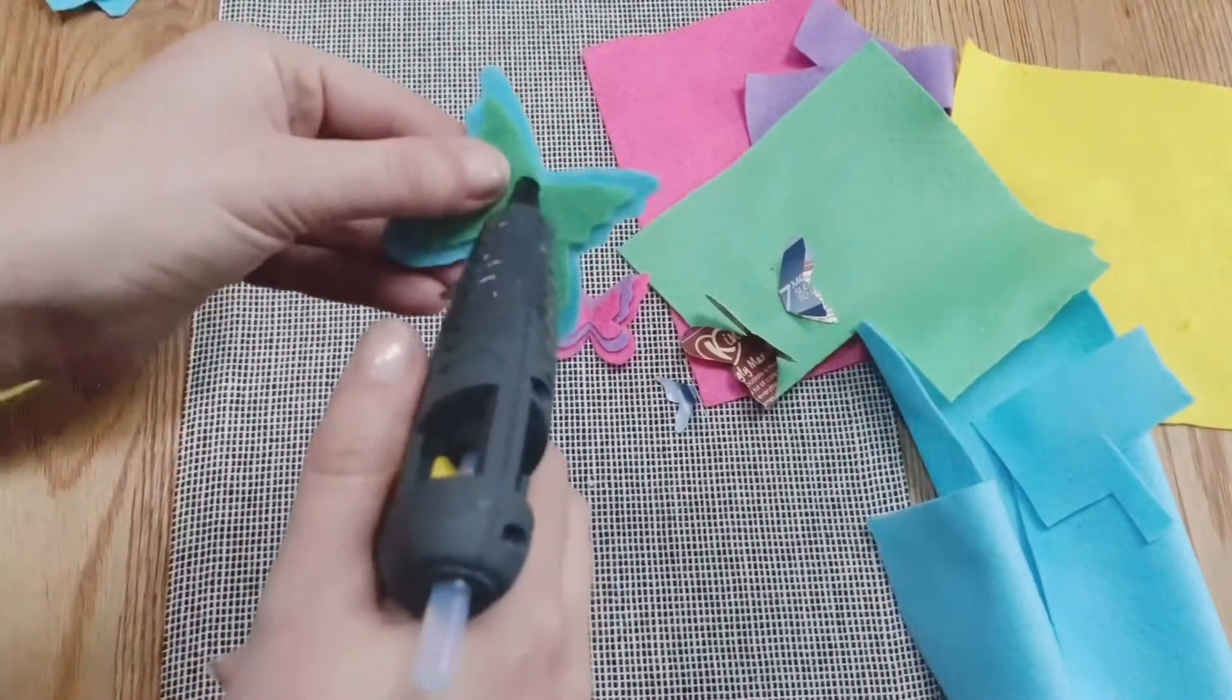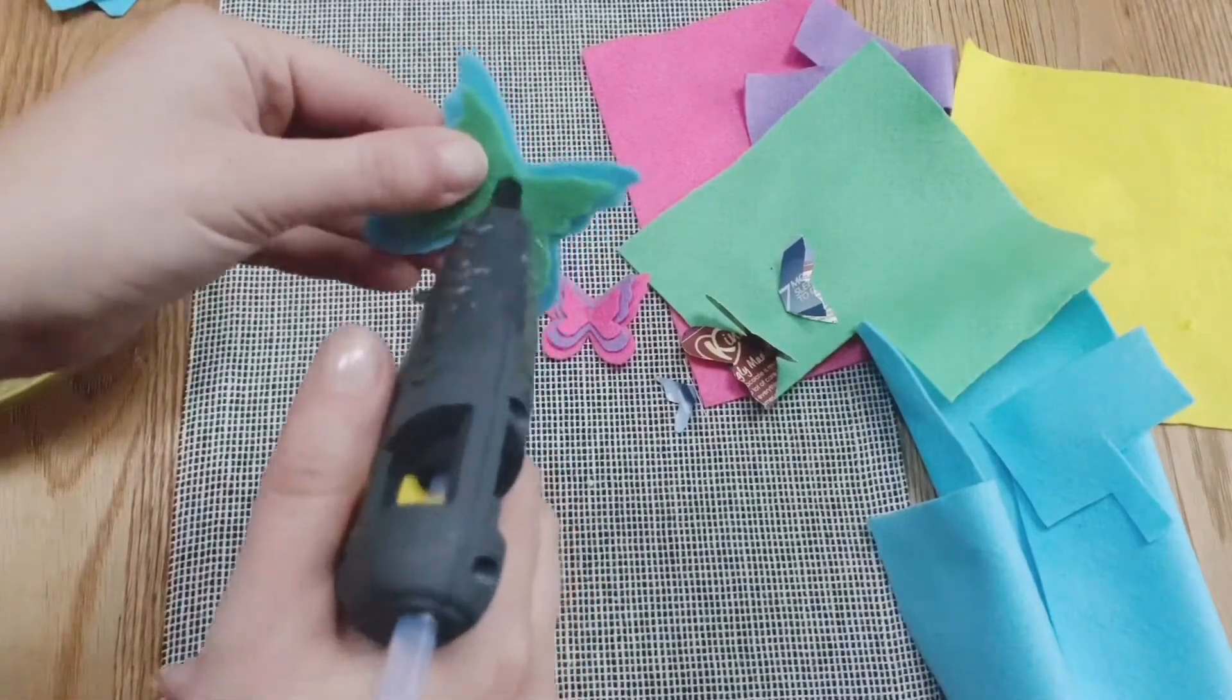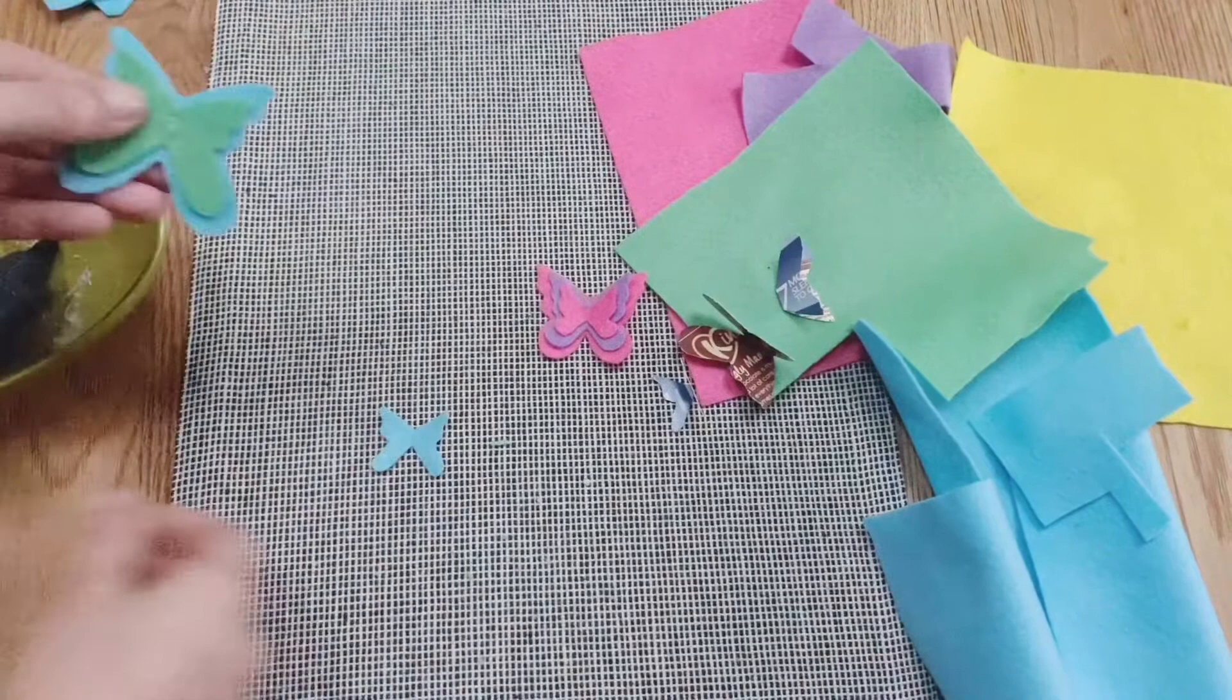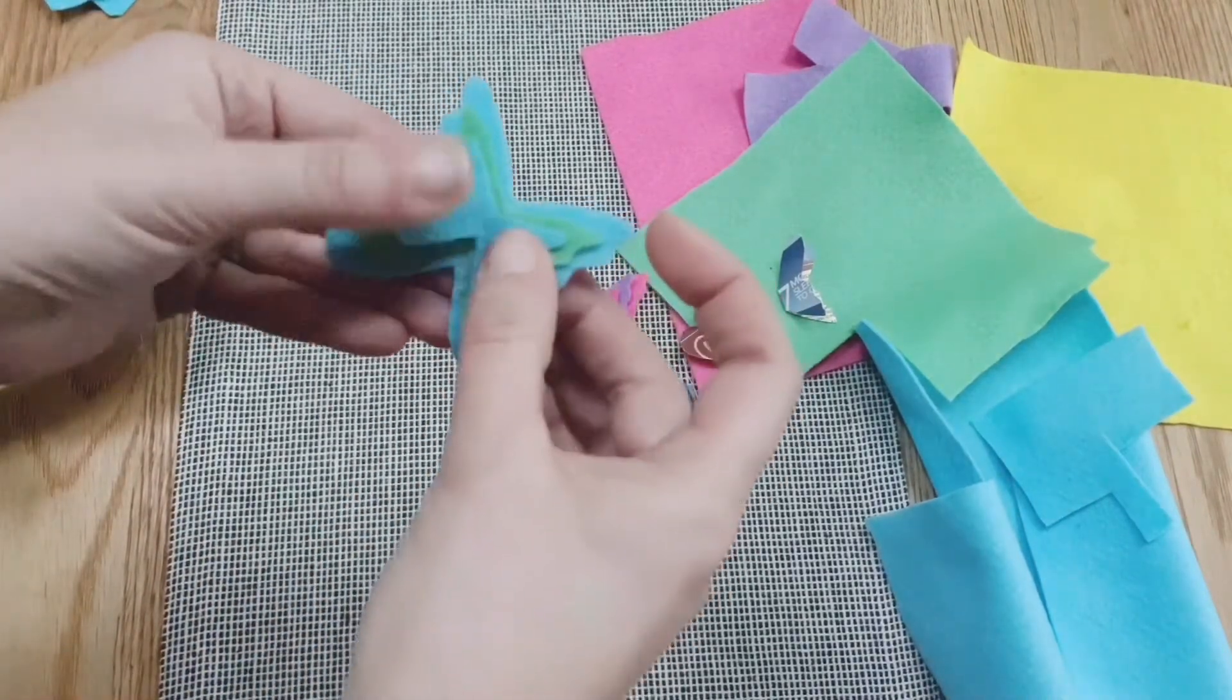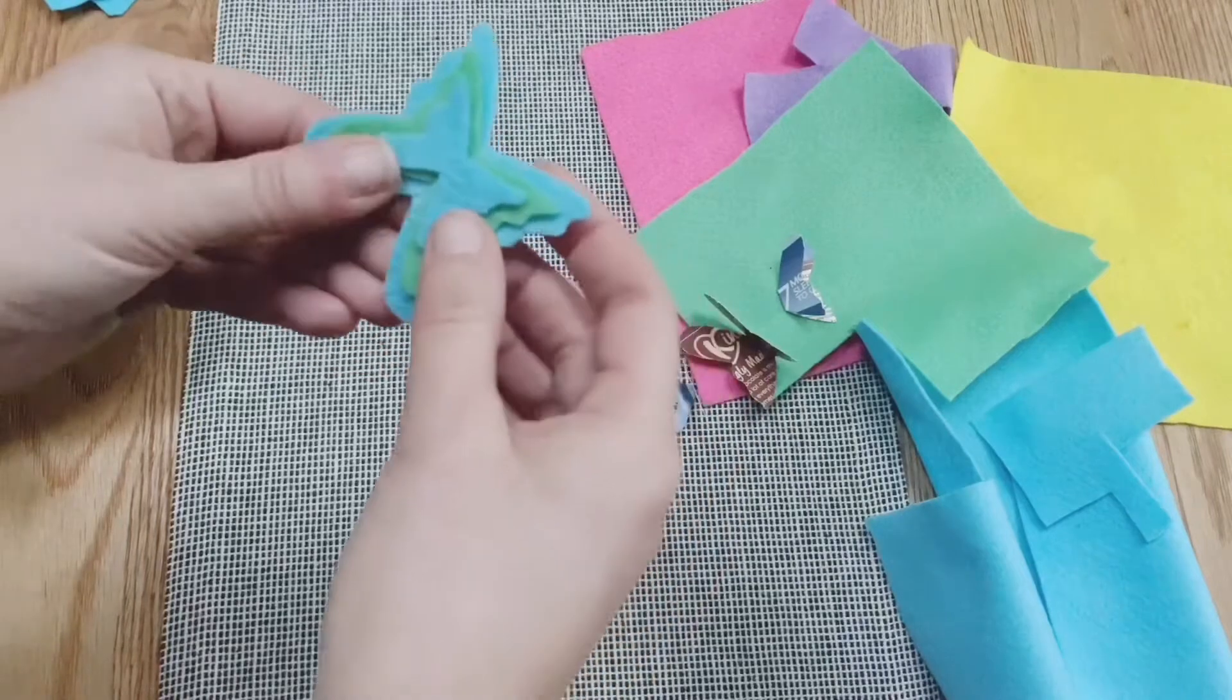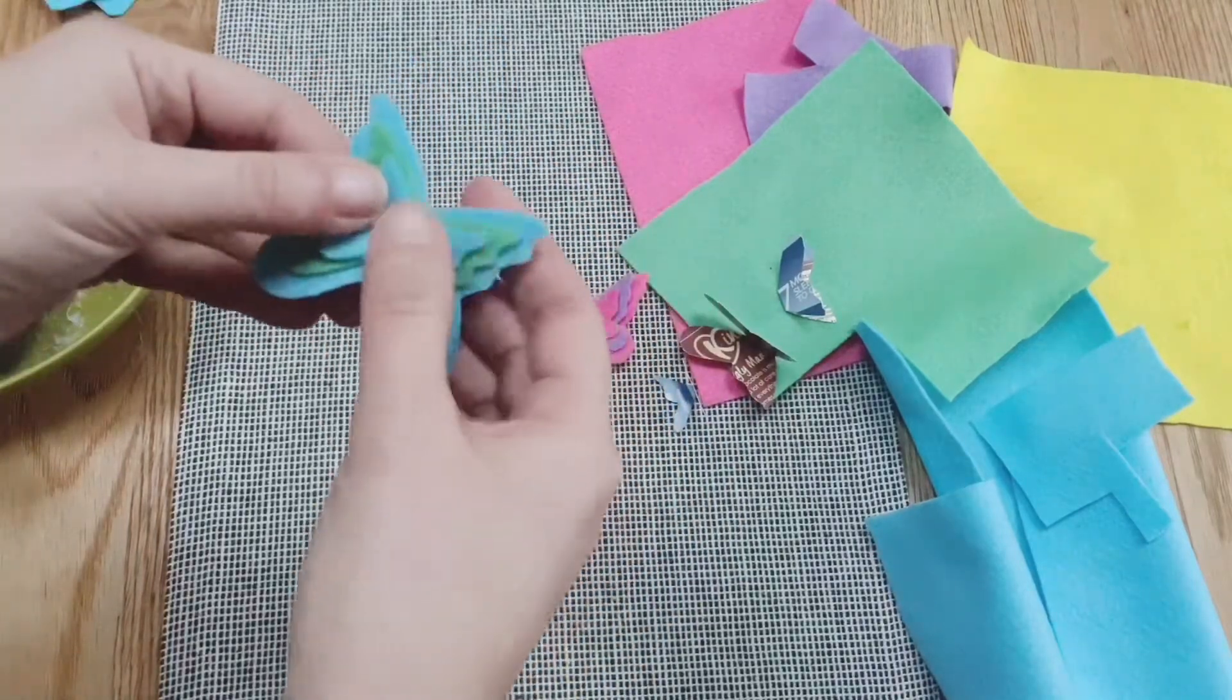And then for the next shape, so simple, repeat the same thing. A little dot of glue, because this one doesn't have much to stick on with. And again, pick your next shape up and center that where you want it on your butterfly.